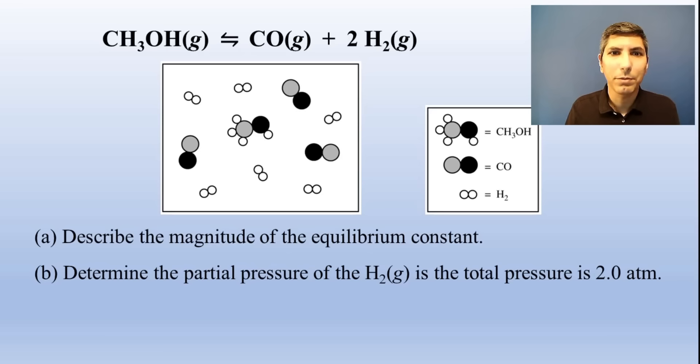We can use a particle diagram to represent the relative numbers of reactants and products in a reversible process. In this example, we're given a particle diagram and we're asked to describe the equilibrium constant. Well, we see that there are a whole lot more carbon monoxide and hydrogen molecules than there are methanol molecules. And since there are so many more product molecules than reactants, we'd say that the equilibrium constant has a very large value.